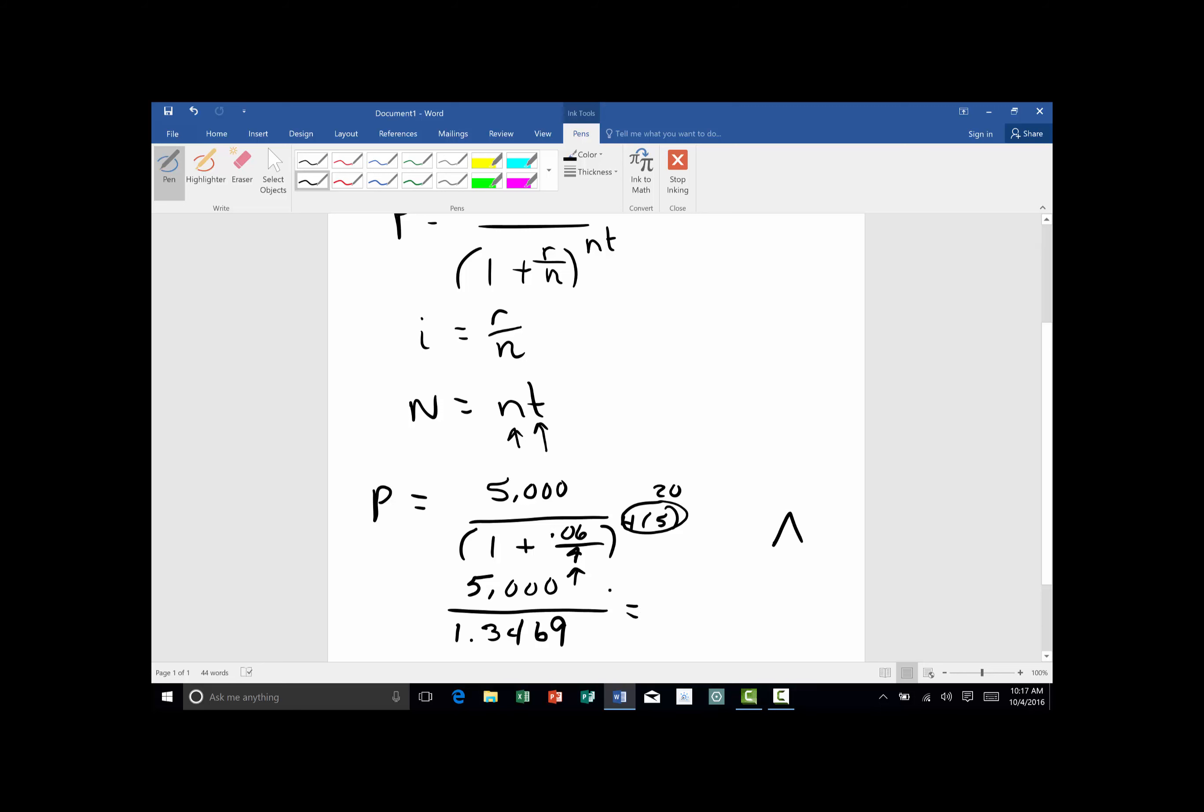You need to make sure that you can get that on your calculator. We still have the 5,000 on the top, so we're going to take 5,000 divided by 1.3469, and I get 3712.23. So if I take $3,712.23 and I put it in a bank account at 6% compounded quarterly, at the end of those 5 years, I will have $5,000.